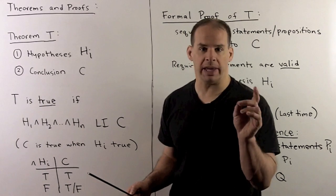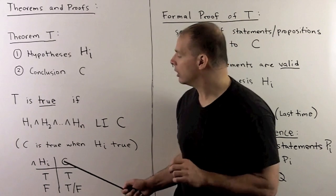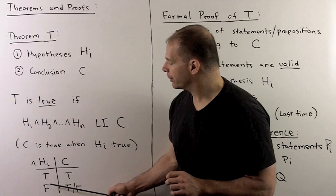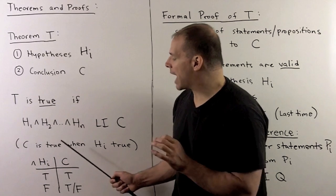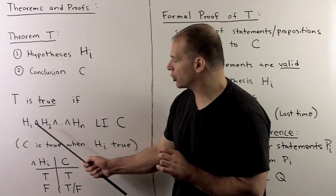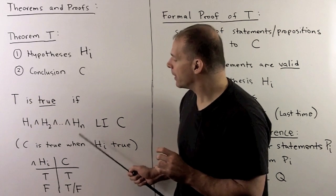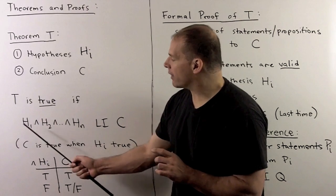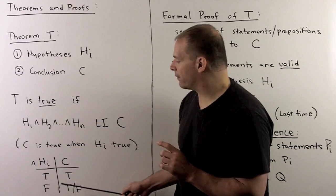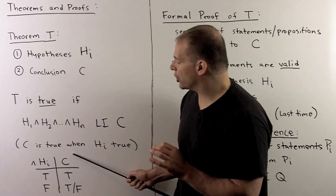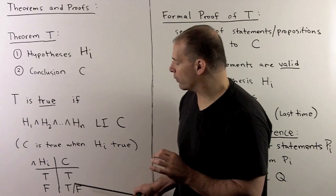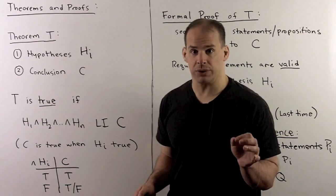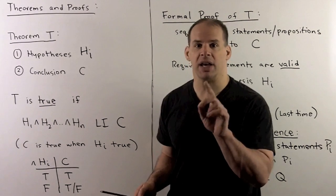For the truth table, the statement on the left is either true or false. For logical implication, when they're all true at the same time, I want the conclusion to be true. If one of our hypotheses is false, then the conclusion could be true or false, so the theorem will be inconclusive — it won't say anything definite.